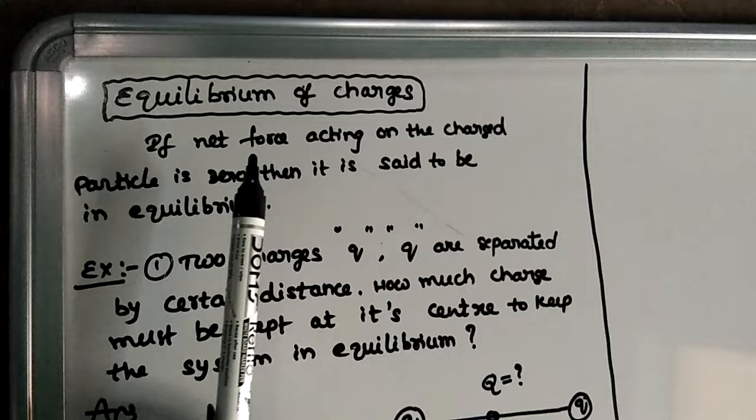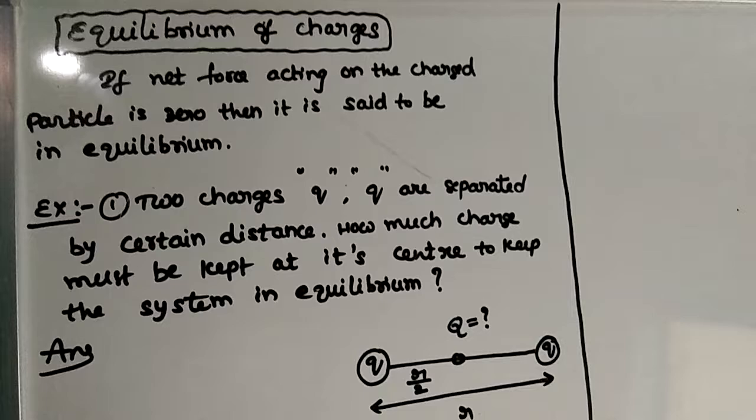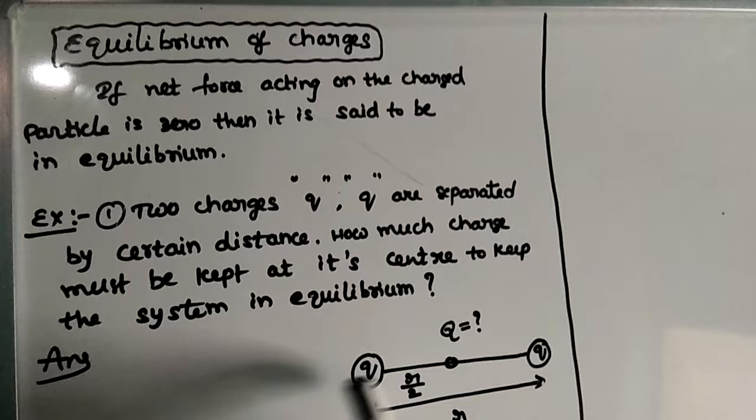So on the base of this thing you are going to get some numericals. Just practice, very good number of numericals are there. So here I am saying one numerical application: two charges Q and Q separated by certain distance. How much charge I have to keep at the middle, at the center, so that the system will be in equilibrium?